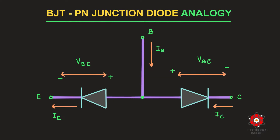To begin, let us understand the BJT and PN junction diode analogy. The bipolar junction transistor can be constructed as two PN junction diodes placed back to back, with the base as the P-type region common to both diodes. The first PN junction forms the emitter-to-base junction, and the second PN junction is between the base and the collector terminals.